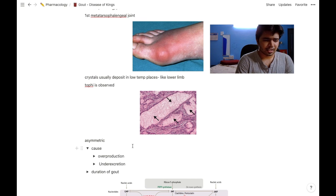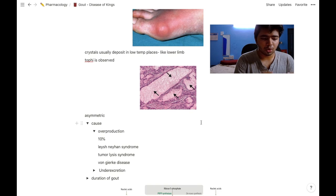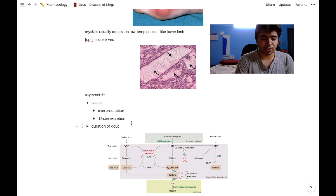The causes of gout may be overproduction of uric acid or decreased secretion of uric acid. Overproduction can be seen in only 10% of patients. A few diseases which show uric acid overproduction are Lesch-Nyhan syndrome, tumor lysis syndrome, and von Gierke disease.